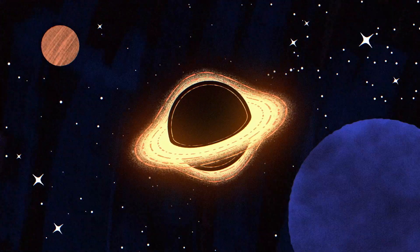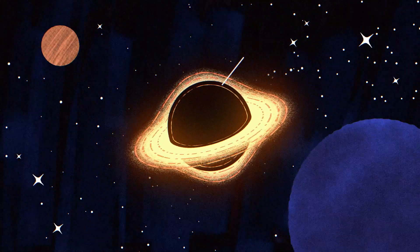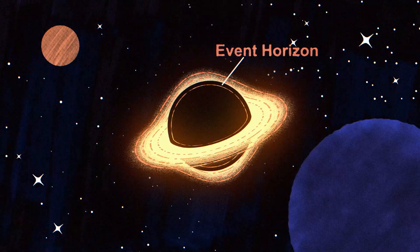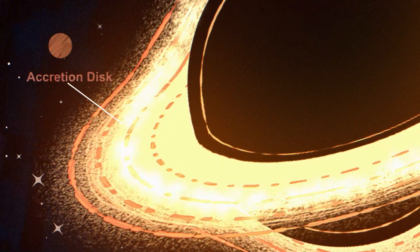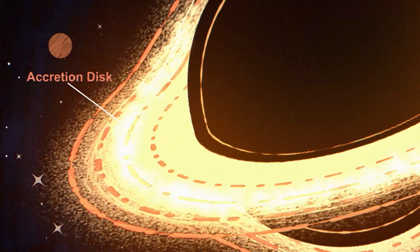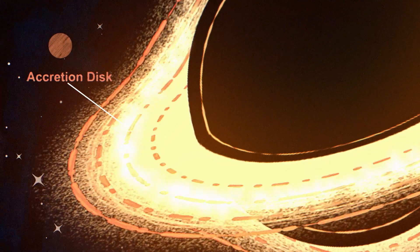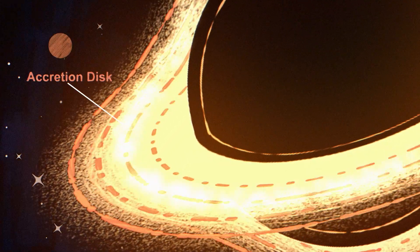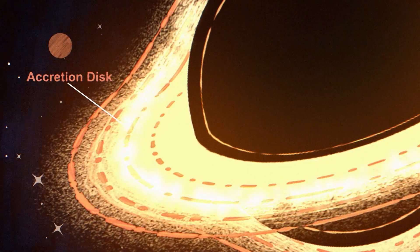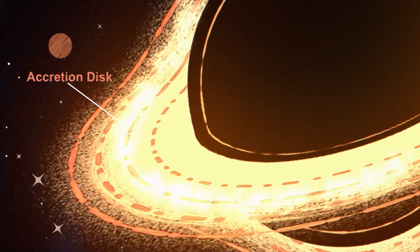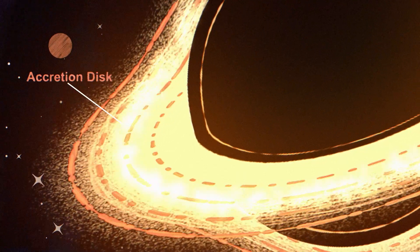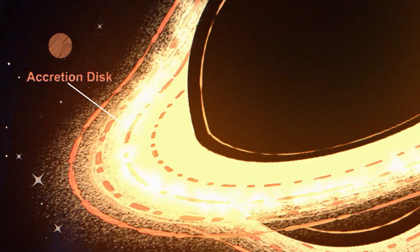The most important part of a black hole is its event horizon, which is the boundary beyond which nothing can escape the black hole's gravitational pull. Another important feature is the accretion disk, which is a rotating disk of gas and dust that surrounds the black hole, forming as it pulls in nearby material. As material from the disk gets closer to the black hole, it heats up and emits radiation, making the black hole visible to telescopes.